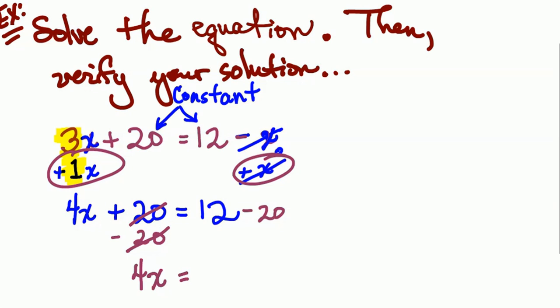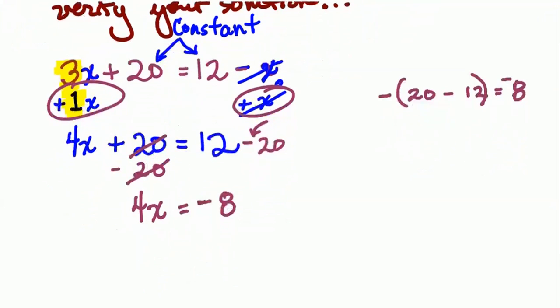Now 12 minus 20. If you have a little trouble with subtracting the negatives, you can do this. You can say what's 20 minus 12? That's 8. But since the larger number in my subtraction is negative, that's the sign that will be on my difference of negative 8. The sign comes from the larger number. Just be careful with your signs.